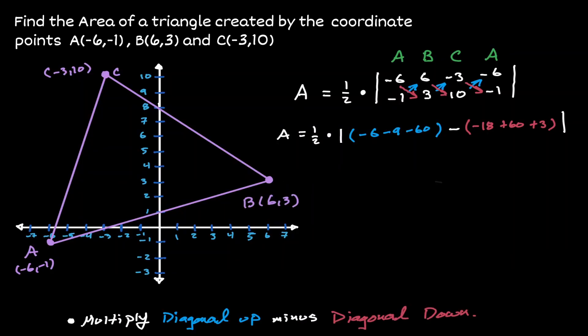So now let's simplify our result. When we get -6, and we subtract 9, and we subtract 60, we get -75. Now let's bring down the minus, and when we combine those values in red, that's going to give us 45.